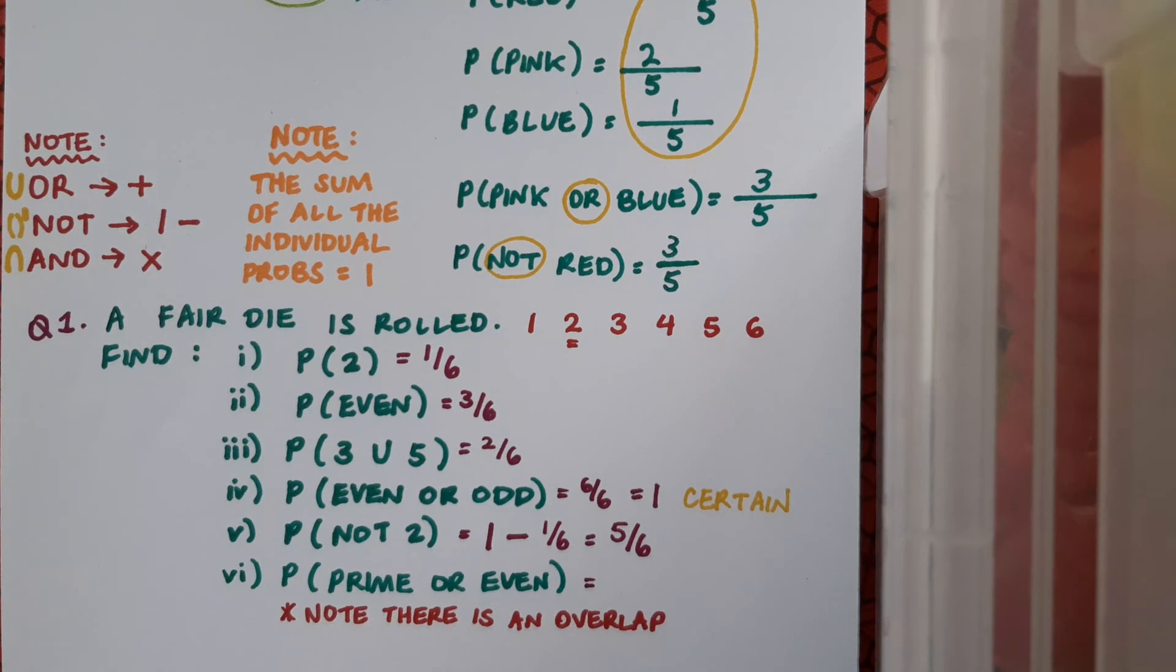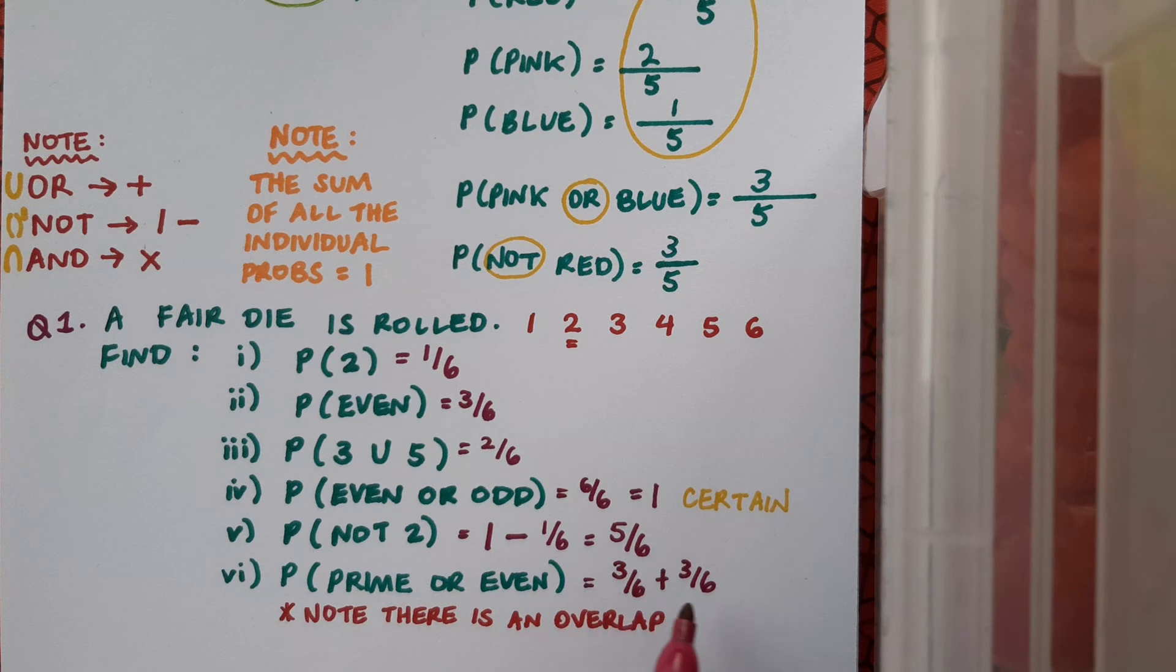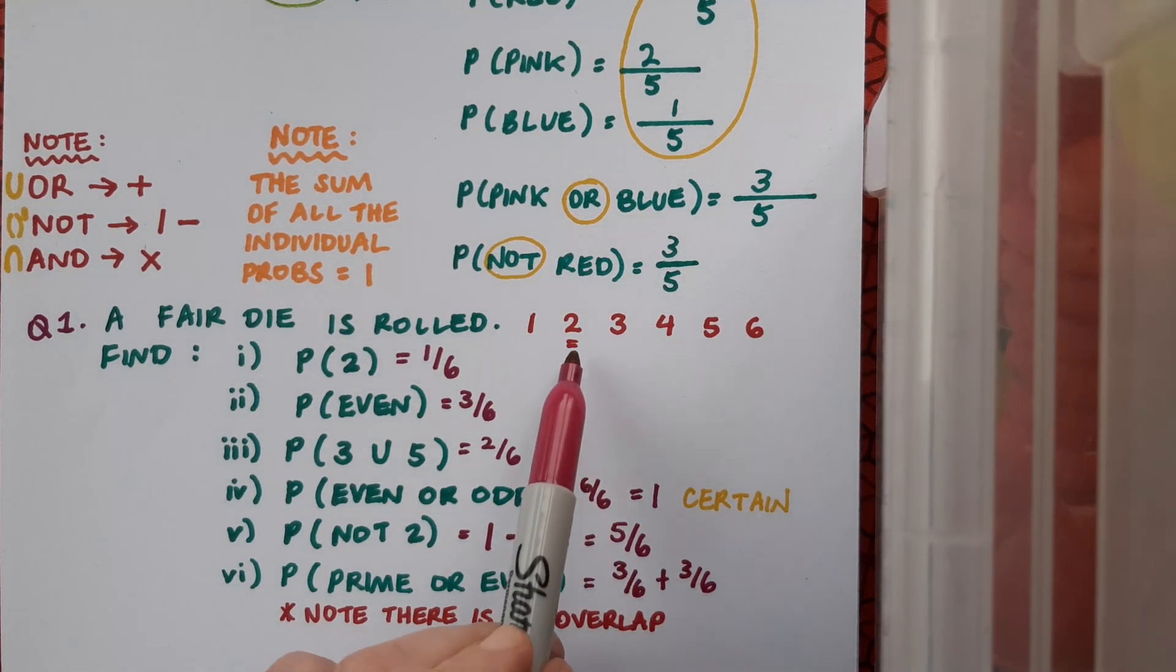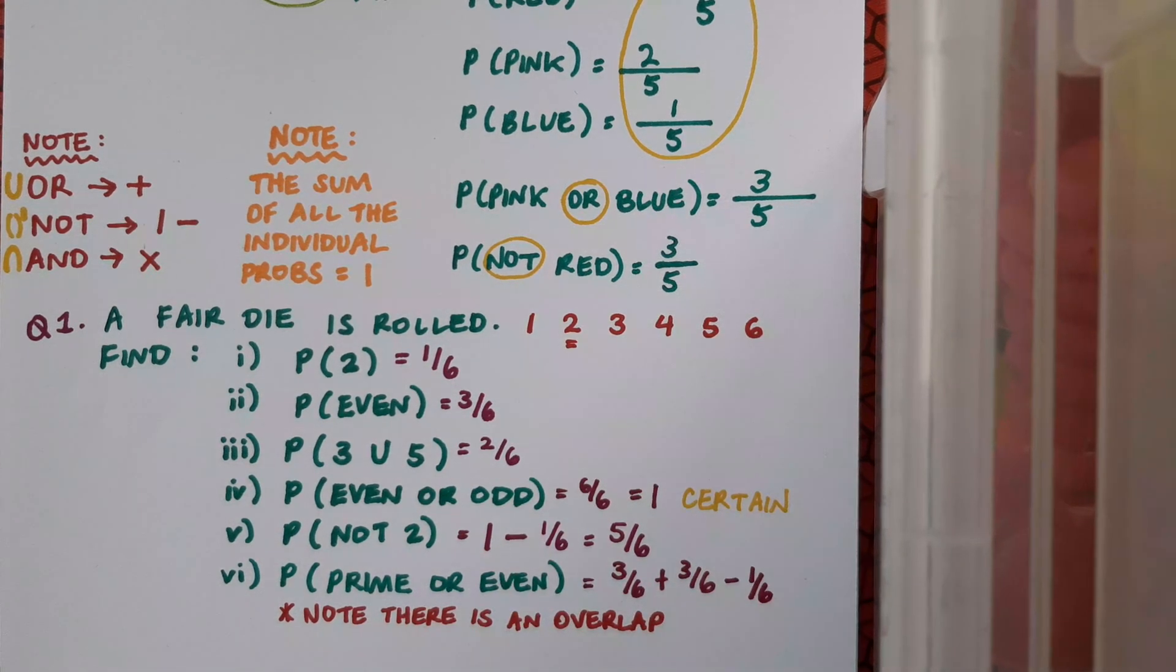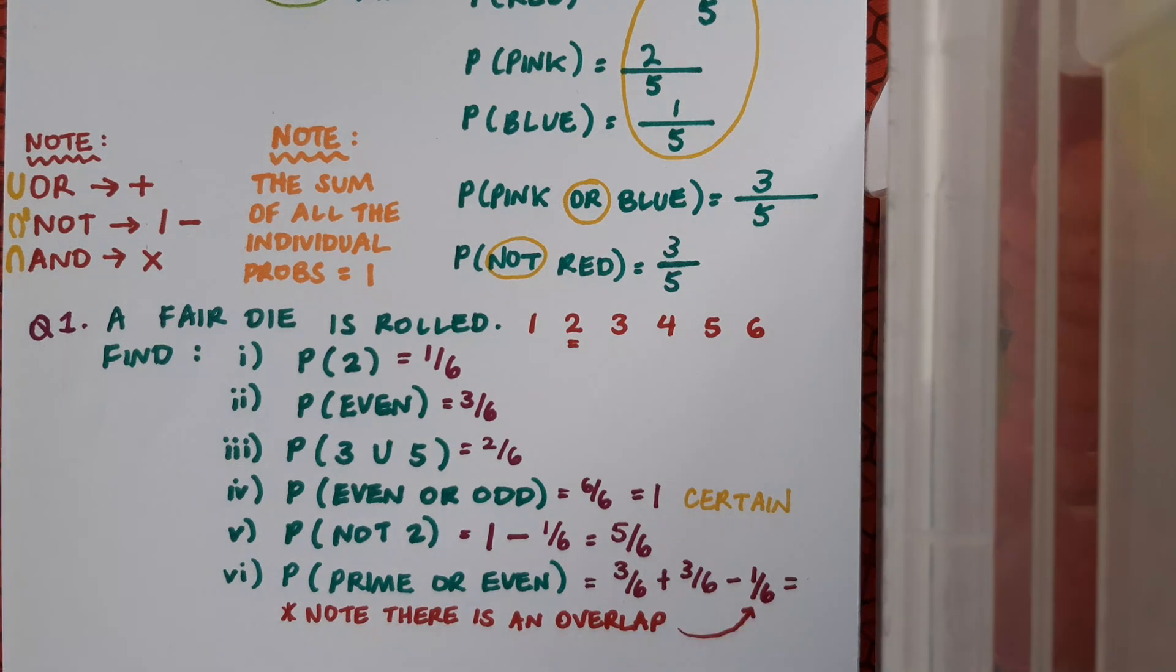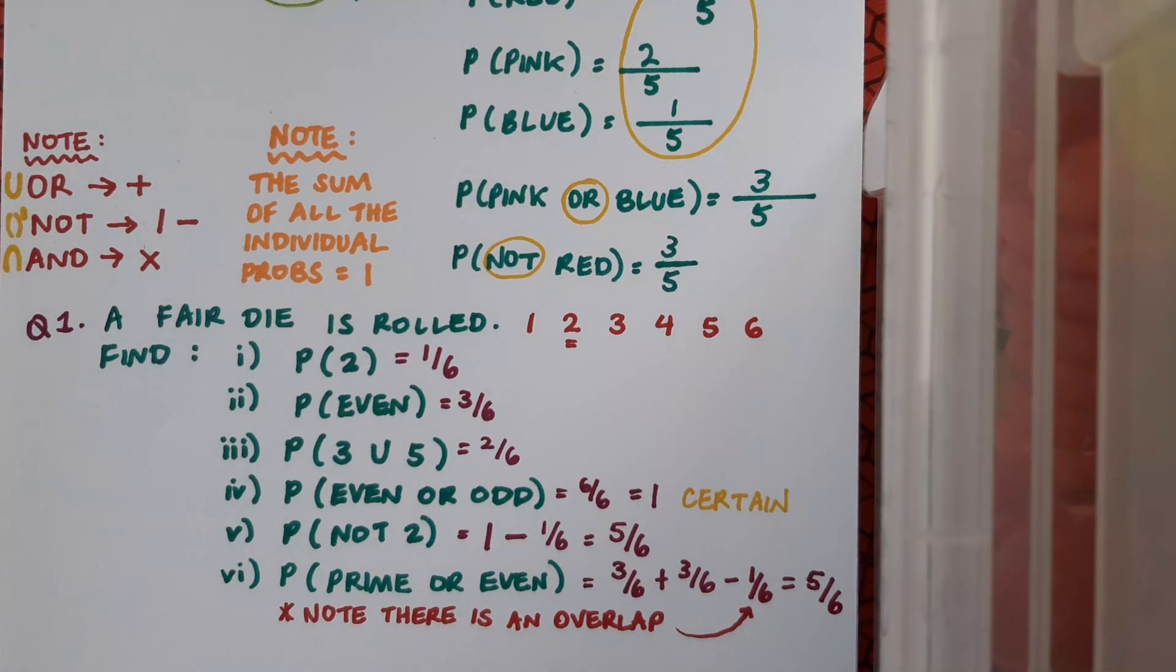So how do we sort that out? Well, I'll start off with this calculation: three over six of the prime and three over six of the even, but then I'll take away the overlap. There's one number where there's an overlap—this is both prime and even. So I simply subtract that overlap and my result is five over six.